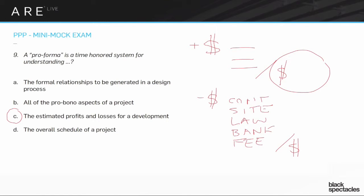So a pro forma is the way you simplify how you put all this information together. It can be very complicated, but the base of it is: I've got some numbers coming in — from selling units, renting them, or whatever my version of making money is — and then I have a bunch of costs, and I'm making sure those balance out. A developer essentially has to have a business plan for any project, and at the heart of that business plan is the pro forma, because that's what shows you'll actually make money. It's a term that's very likely to show up on the exam, and you should definitely feel comfortable with it.